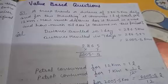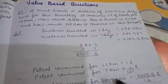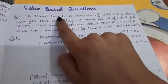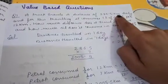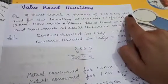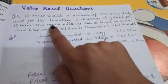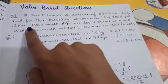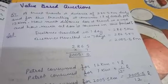Now let us move to the value-based questions. Question number one: a truck travels a distance of 286.5 kilometers daily and consumes one liter of diesel per 12 kilometers.